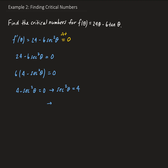Since secant theta is 1 over cosine theta, it's the reciprocal of cosine theta. So we can rewrite this as 1 over cosine squared theta equals 4. Taking the reciprocal of both sides gives cosine squared theta equals 1/4. Then taking the square root of both sides gives cosine theta equals plus or minus 1/2.